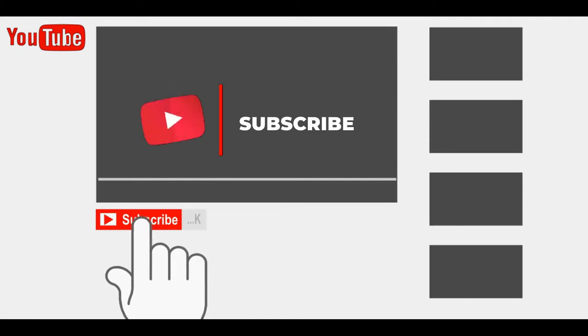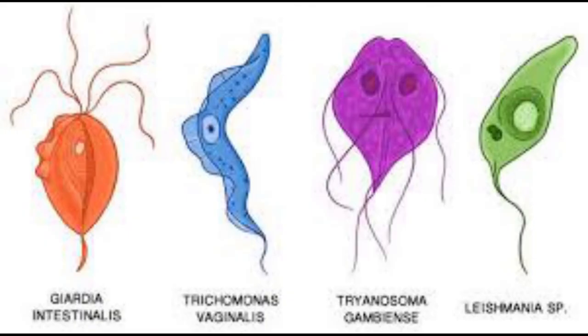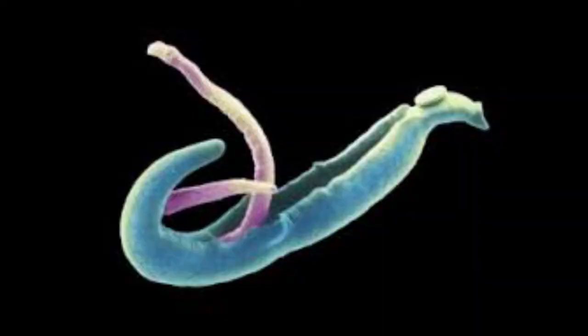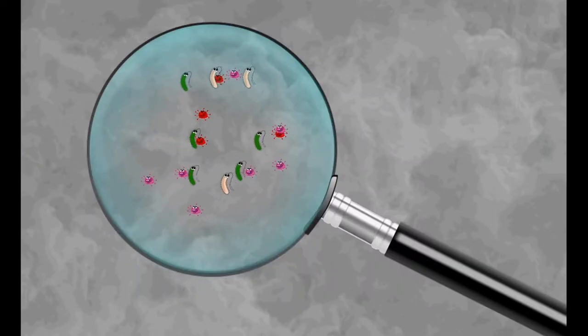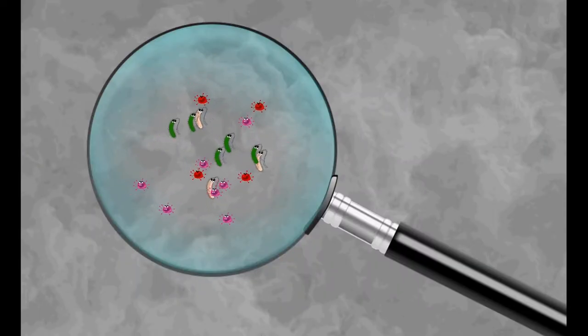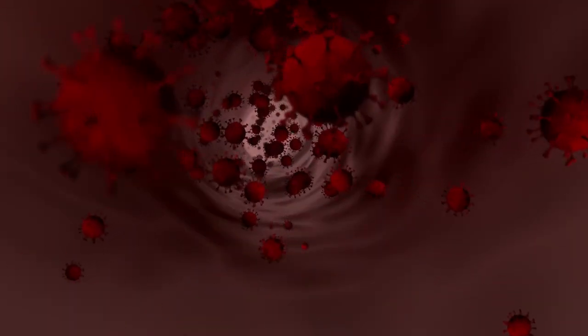Now, from the first lecture we were able to grasp that there are two types of parasites: micro-parasites and macro-parasites. Micro-parasites are small, made up of just a single cell, and they multiply within their vertebrate hosts. Macro-parasites are large, they are multi-cellular, and they have no direct reproduction within their vertebrate hosts.